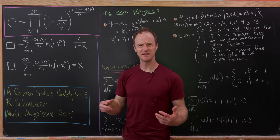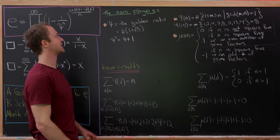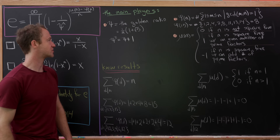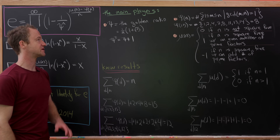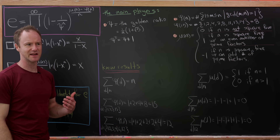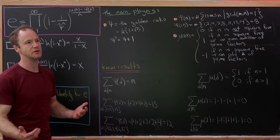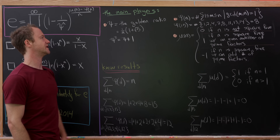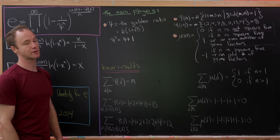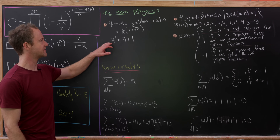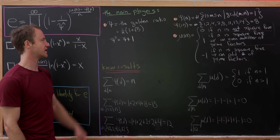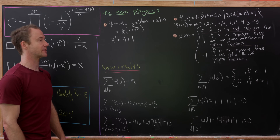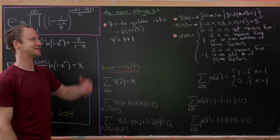Let's decode what all of these parts are — the main players of this identity. We're going to set psi equal to the golden ratio, instead of phi, because we'll use phi for something else. The golden ratio is one half times 1 plus the square root of 5. It's also defined as the positive root of psi squared equals psi plus 1.